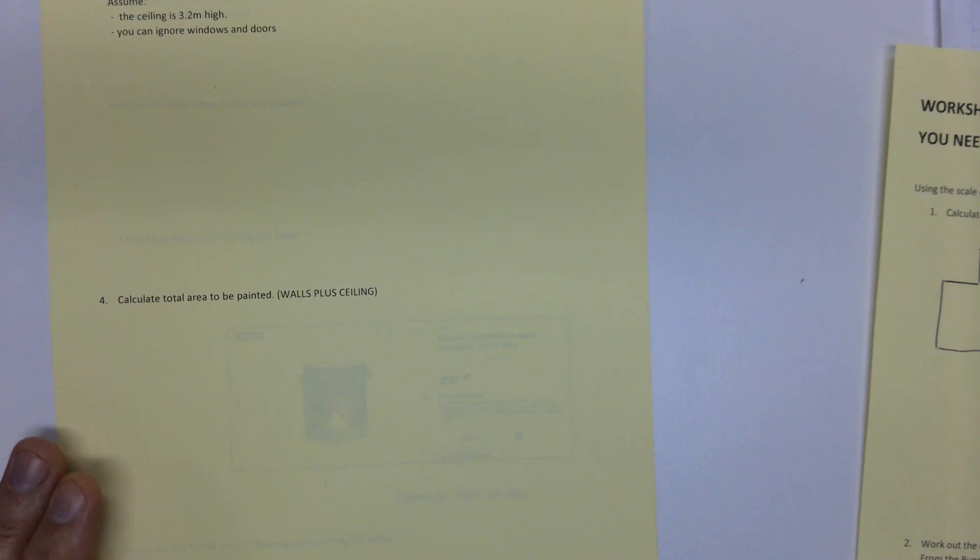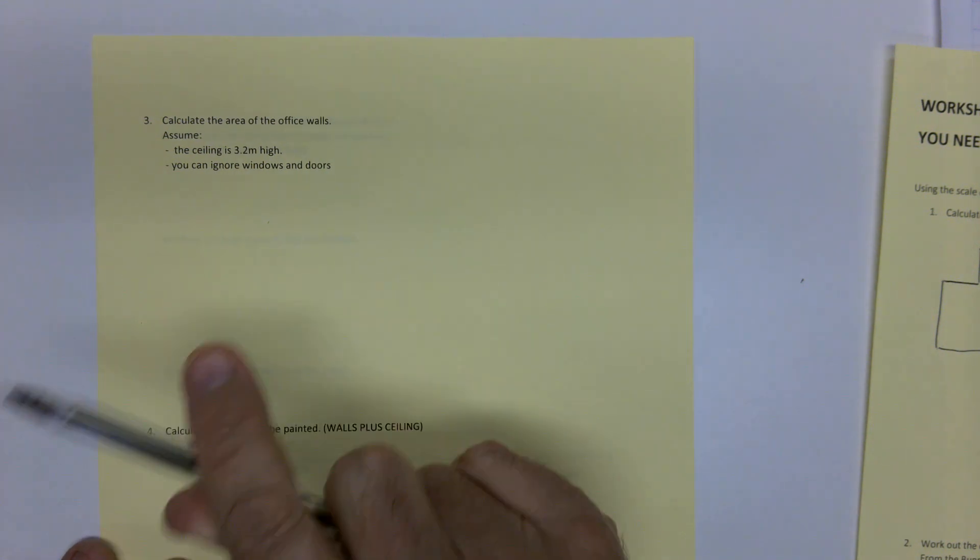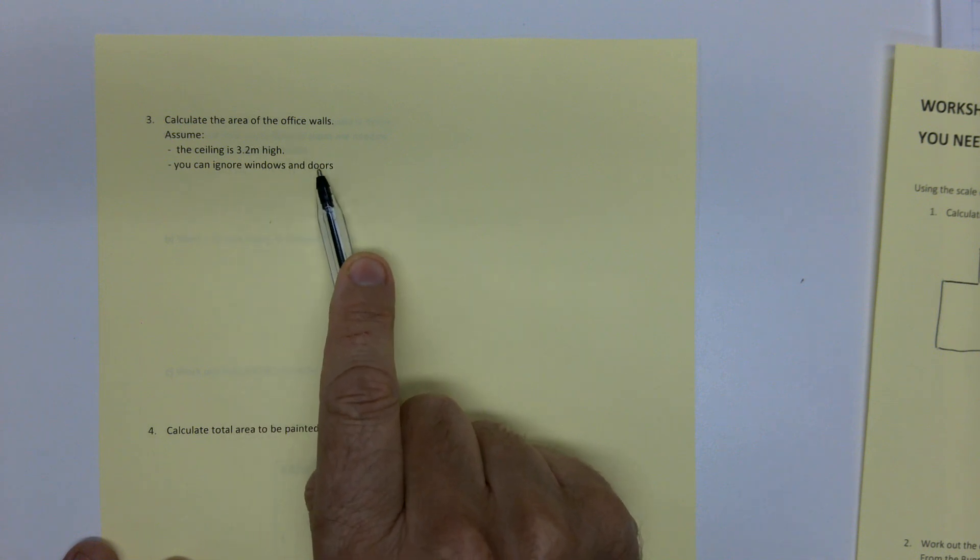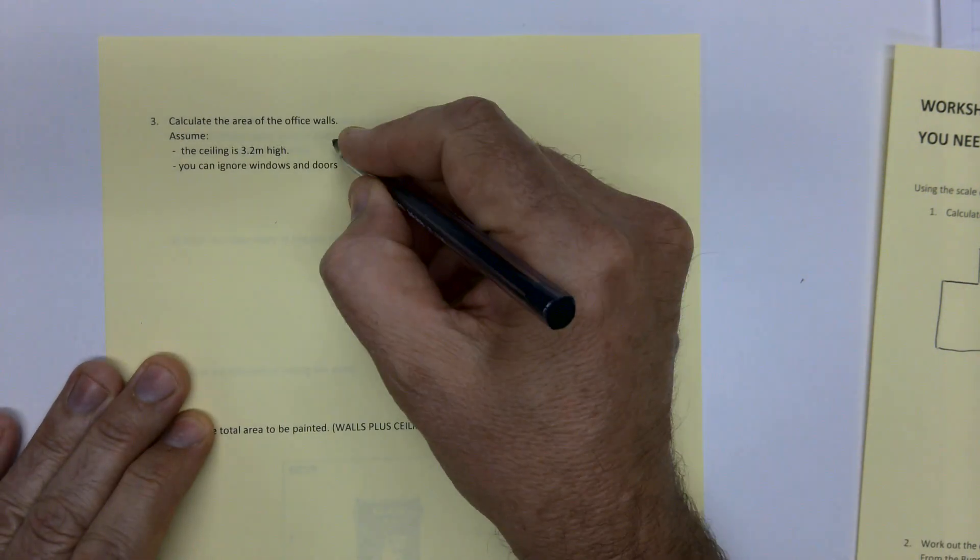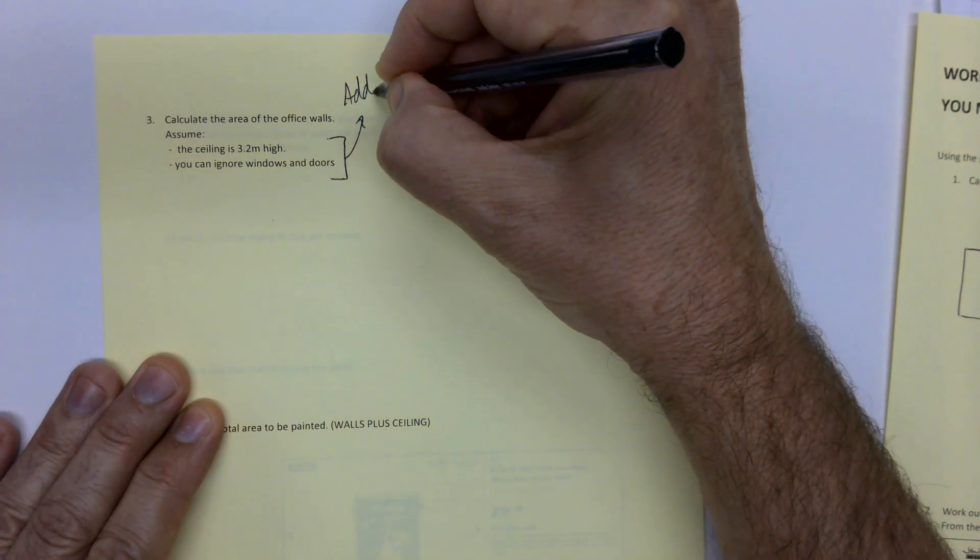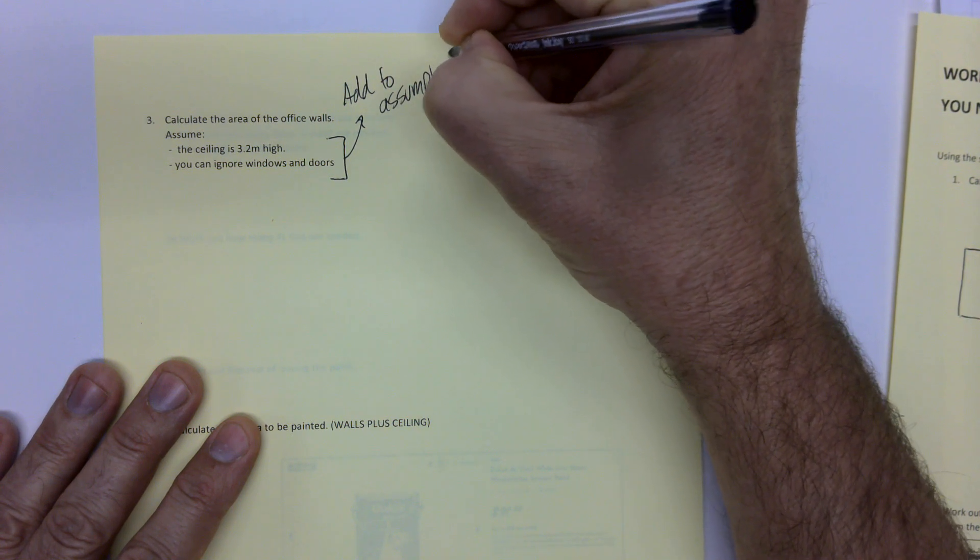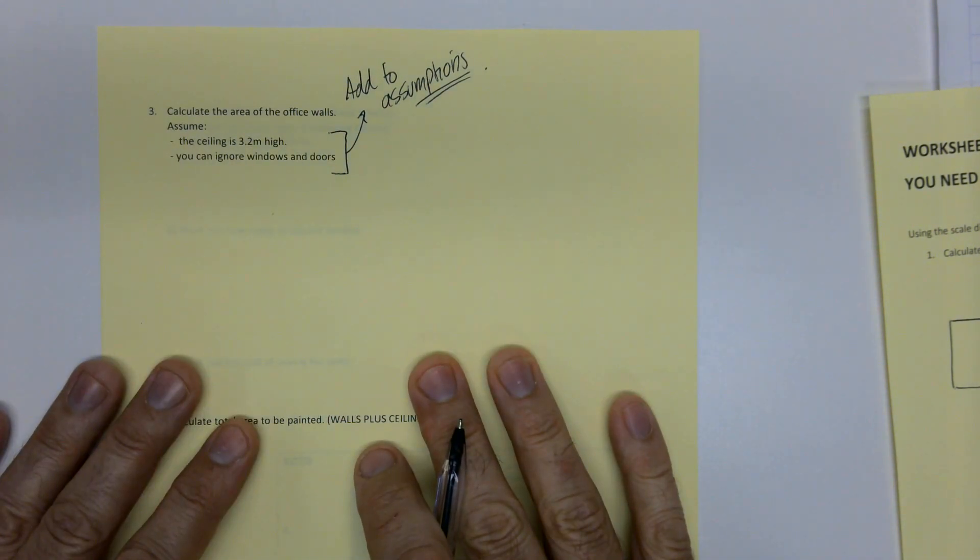Now we need to look at the walls. We're going to paint the walls. So you've got there an assumption at the start. You're going to assume the ceiling is 3.2 meters high, and you're going to assume that you ignore windows and doors. So you're assuming that it's all a smooth thing. We're not going to subtract windows and things like that. Now, you need in your assignment to figure something out like that. Add to assumptions section. You need to state assumptions. You need to assume that the ceiling is a certain height.